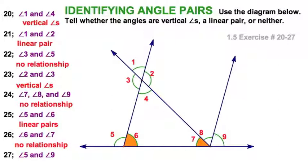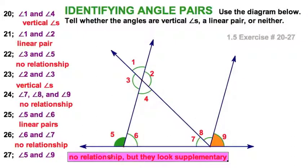And finally, the last one: angles five and nine. These two angles look like, well, they look to me like they are supplementary. They could be, and we'll learn later on if these two lines were parallel—if we knew they were parallel, they'd be supplementary. But we don't know that for certain, so all we can say is no relationship on five and nine.